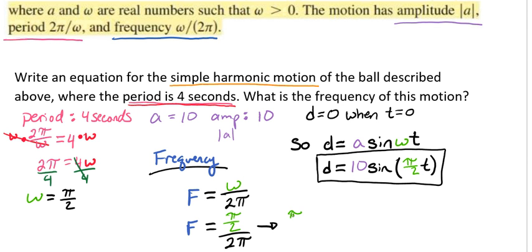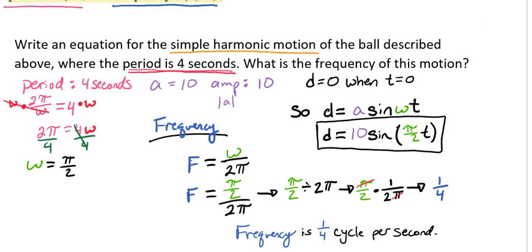And so what does that really mean for us? Well, that means that we have π over 2 divided by 2π. So we'll keep change flip, which will give us π over 2 times 1 over 2π. I caught myself really quick. I forgot to actually flip that, didn't I? So this should be 1 over 2π, which is going to give us the ability to cancel out our π. So there's one on the top and one on the bottom, which gives us a frequency of 1 fourth. And so we get that the frequency is 1 fourth a cycle per second.